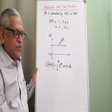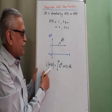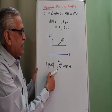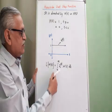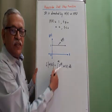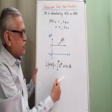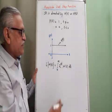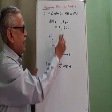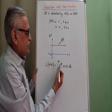The Laplace of the Heaviside unit function is obtained by the integral from 0 to infinity of e raised to minus s t into that function h of t dt. Then as per definition,